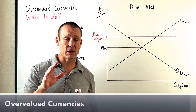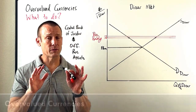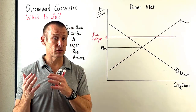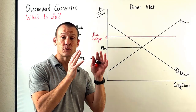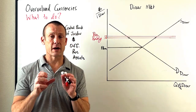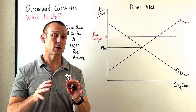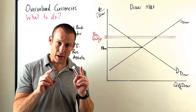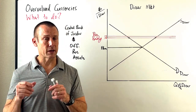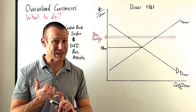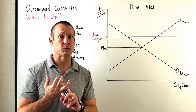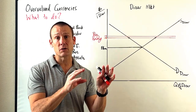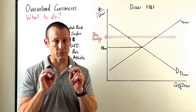Hey everybody, in this video we're going to be talking about overvalued currencies. We're talking about a country that is pegging their currency to another currency. Usually countries that peg their currencies peg them either to the dollar or to the euro. In this video we're mainly going to be talking about what is an overvalued currency and what a country can do about it. What we're not going to be talking about is what is a peg or why countries peg — look for other videos for that.